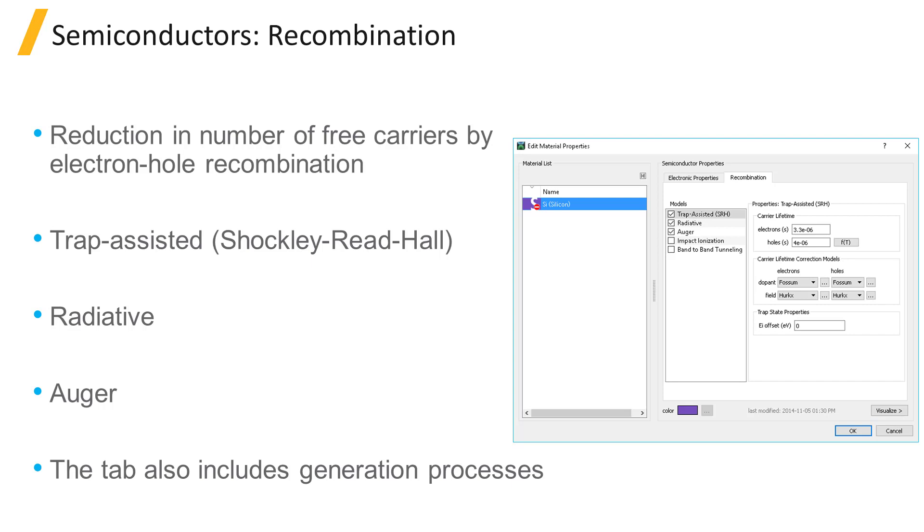Recombination generally describes the processes by which an electron from the conduction band makes an energetic transition and neutralizes a hole in the valence band, resulting in reduction of the number of free charge carriers in the semiconductor. The models for recombination processes relate to the physical mechanisms by which the carriers make this energetic transition.